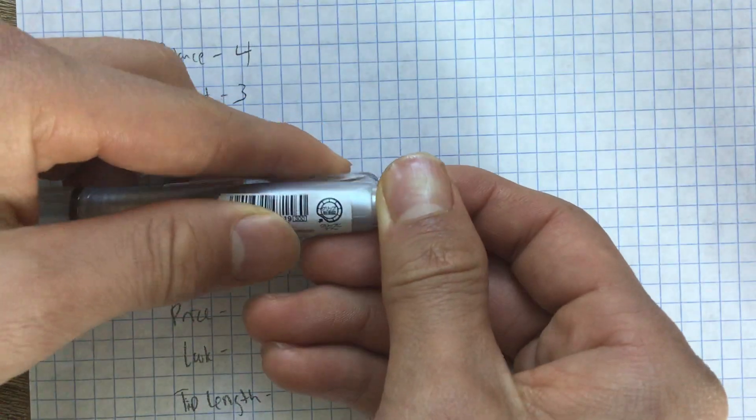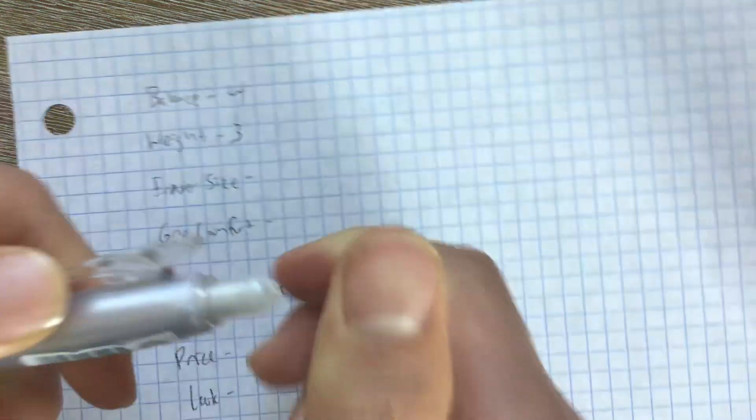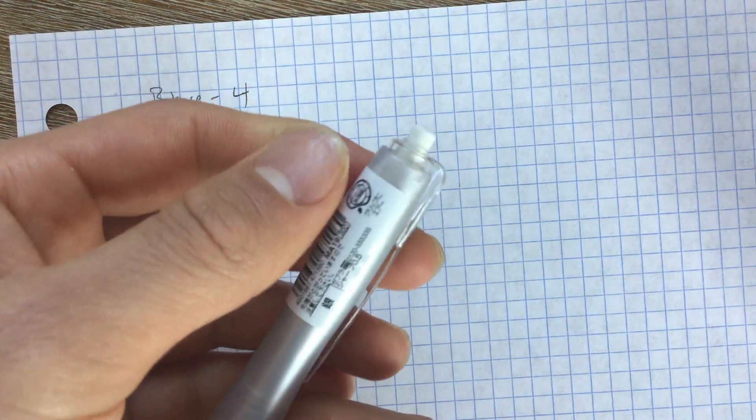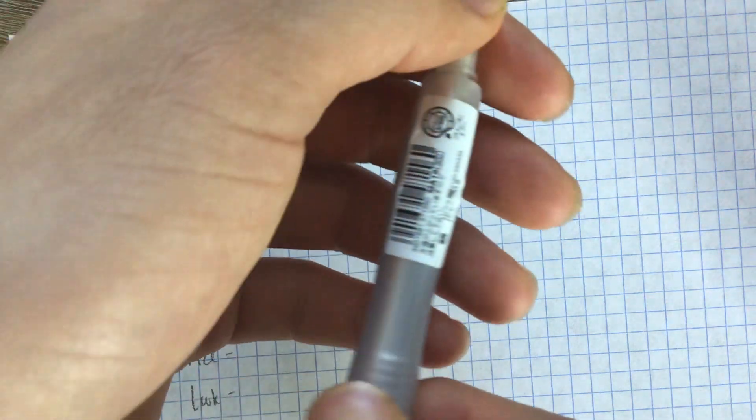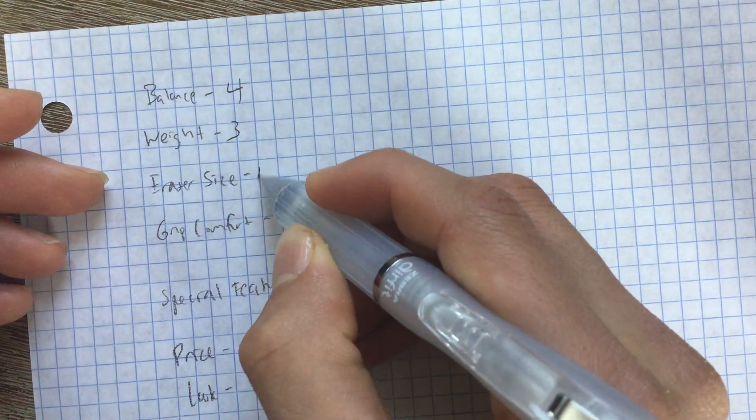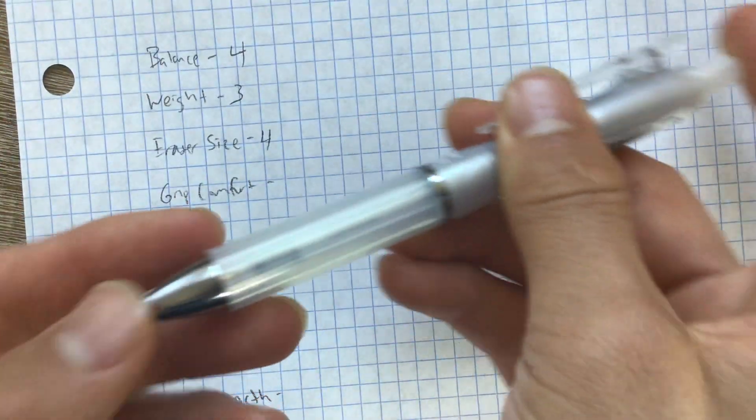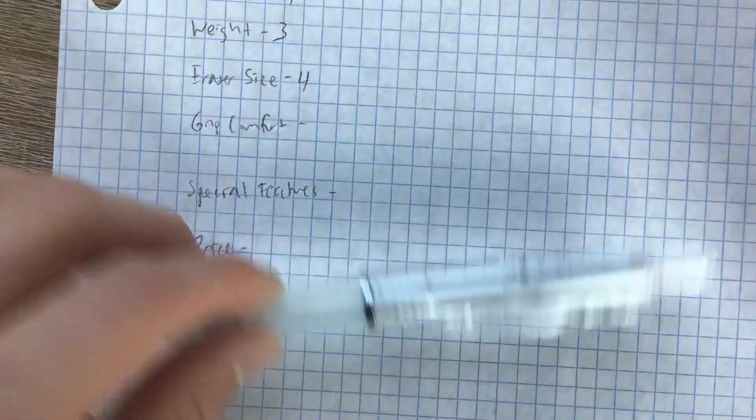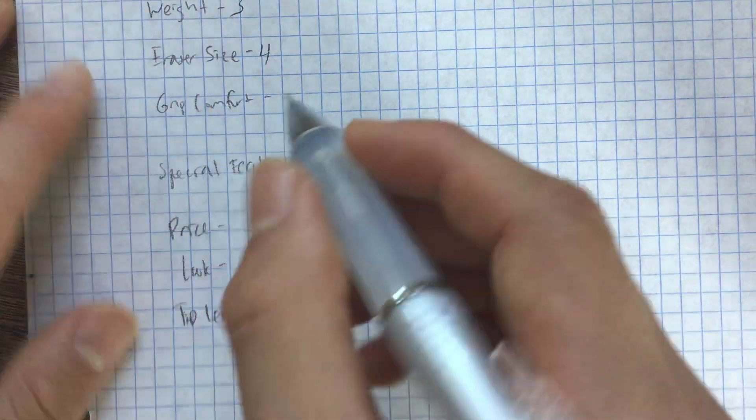Eraser size, a huge selling point for many people on buying a pencil. Try to get this off. Okay. So it's actually decently sized. It's bigger than usual, I would say. So I would give this a four in terms of eraser size. I know that's a big plus for people. People like having a bigger eraser. They think that smaller erasers look a tiny bit tacky. So that's something I'm trying to include in my reviews for this channel.